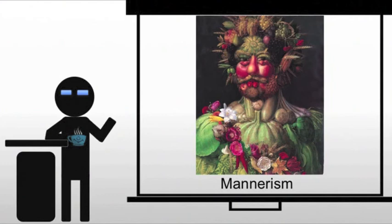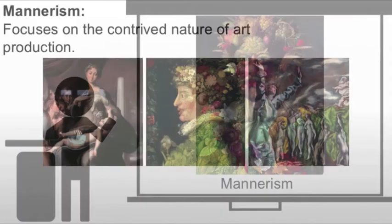Mannerism did not pursue the natural study of the figure. To many of the Mannerists, we are at the point where they can really start improving the figure — not really in Michelangelo's sense, where you start developing musculature, but in other ways. Rather, Mannerism focused on the contrived nature of art production.